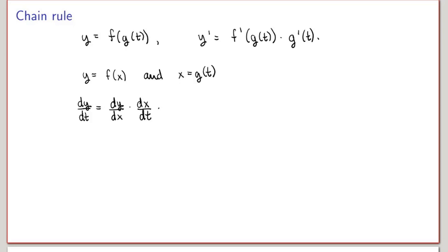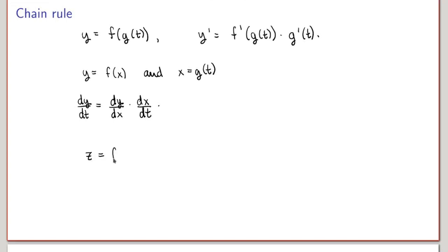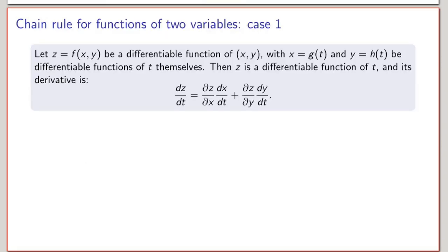Can we generalize the chain rule to functions of several variables? For instance, if we're given a function z which is a function of two variables x and y, and x and y are both functions of a new variable t, can we write down a chain rule to calculate the derivative of z with respect to t? The answer is yes, giving us the chain rule for functions of two variables in case one. So let z be a differentiable function of two variables x and y, with x and y both differentiable functions of a variable t. Then the derivative of z with respect to t equals the partial derivative of z with respect to x times dx/dt, plus the partial derivative of z with respect to y times dy/dt.